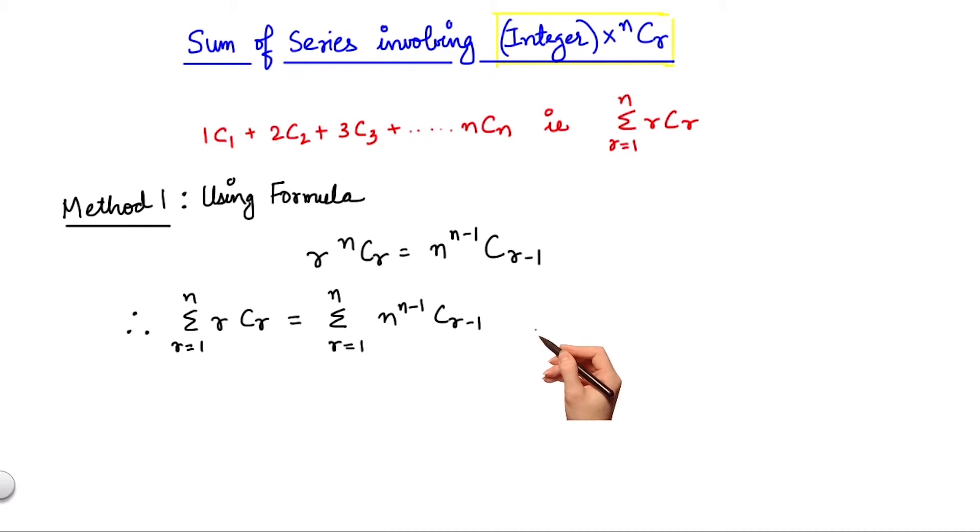Since n is independent of r, I can take it out of the summation sign to get n times (n-1)c(r-1). Now this is the summation of binomial coefficients from 0 to n-1. For n terms, the sum is 2^n. For n-1, the sum would be 2^(n-1).